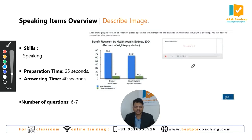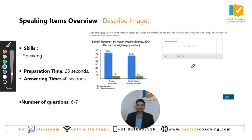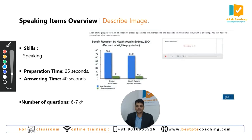You have to describe the image briefly. You don't have to describe everything — just the main features within 40 seconds. This question scores in speaking and is not an integrated question type. In the exam, a minimum of six and a maximum of seven images will be given to you.